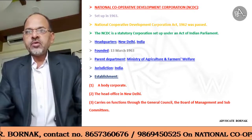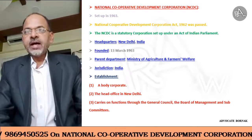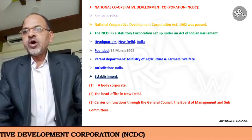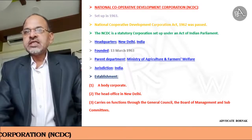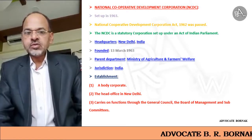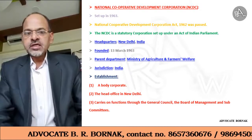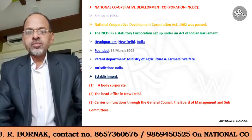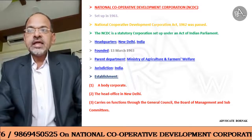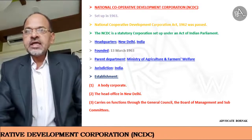NCDC, that is National Cooperative Development Corporation, was set up at the national level in India in 1963 by passing an Act of Indian Parliament — the National Cooperative Development Corporation Act 1962. It was founded on 13th March 1963 on the basis of the NCDC Act 1962.